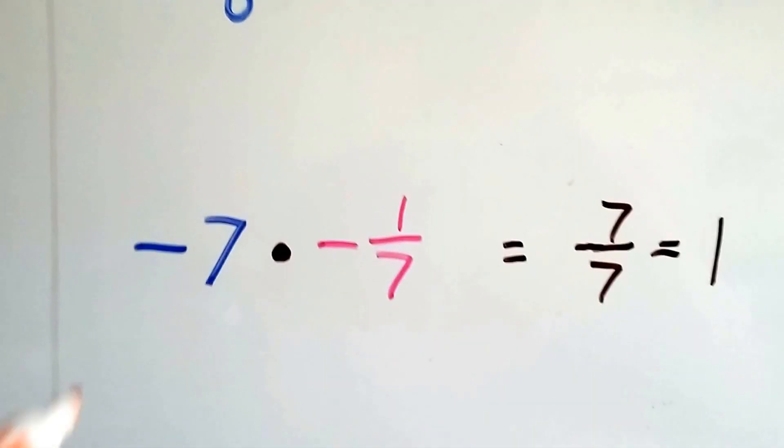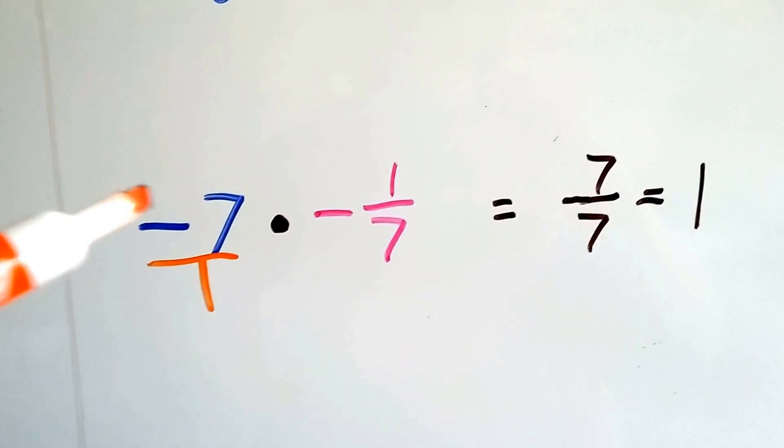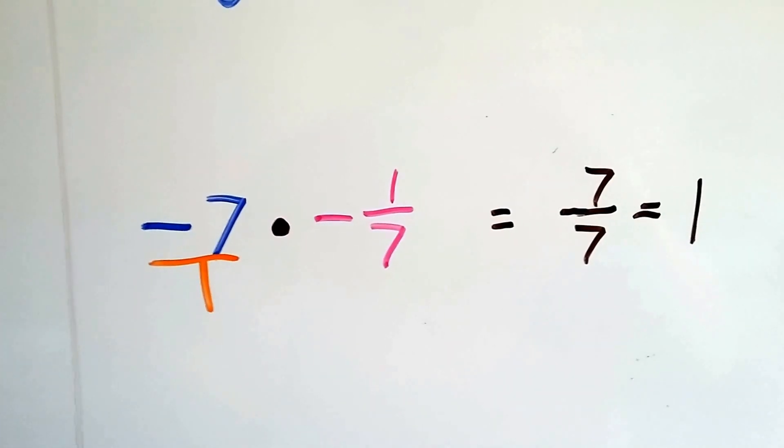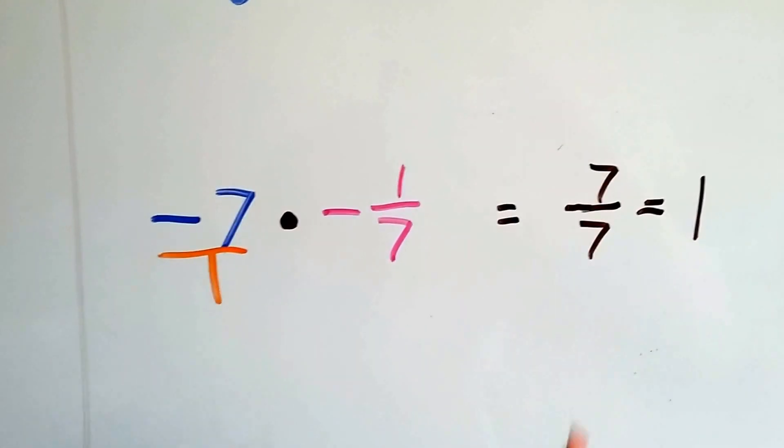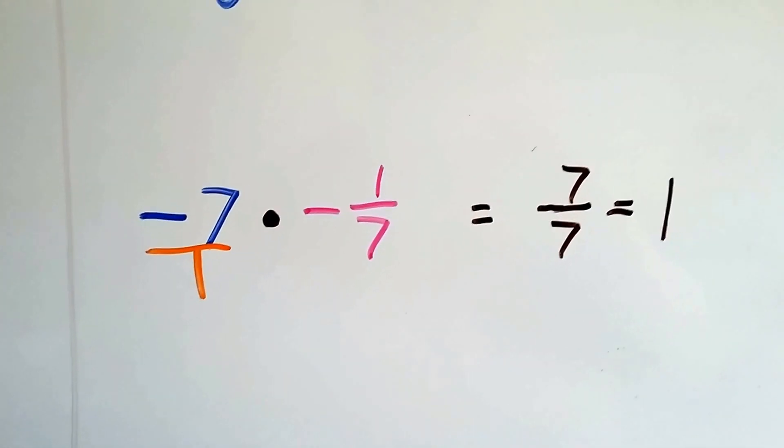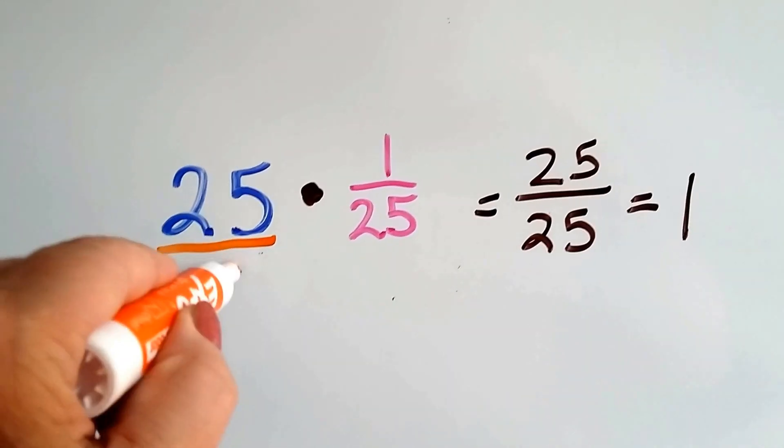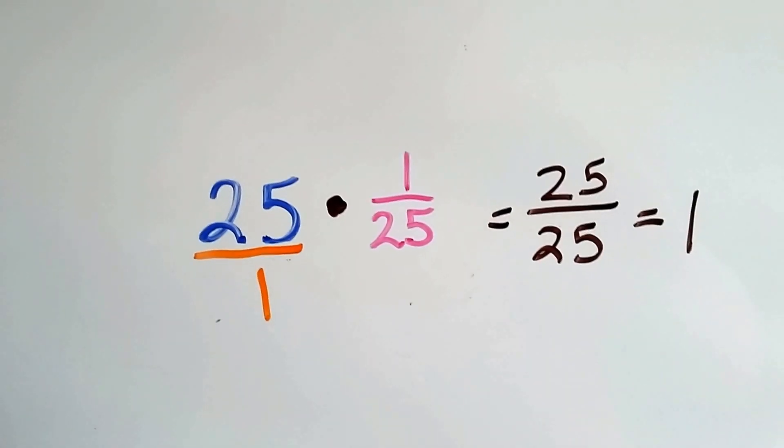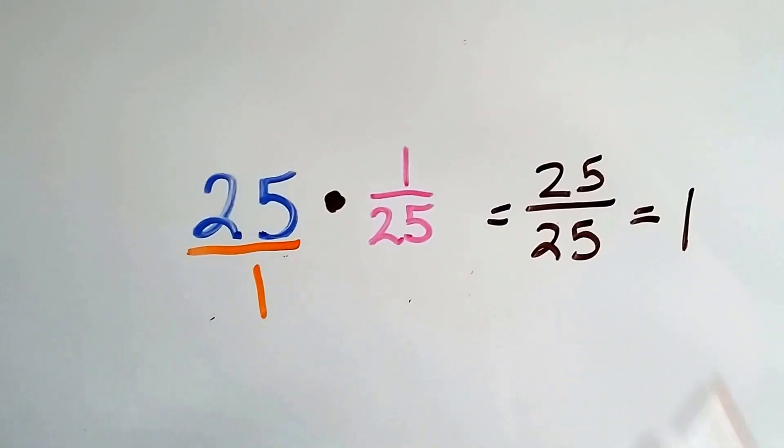If we have a negative 7, you can just write it over 1. And that's going to equal negative 7. Negative 7 over 1 is the same thing. Multiply straight across, and you have negative 7 times negative 1. That's going to give you a positive 7. And 1 times 7 is 7. You have 7 over 7. It's a 1. If we have 25, we can write it over 1. And 25 times 1 is 25. And 1 times 25 is 25. That equals 1.